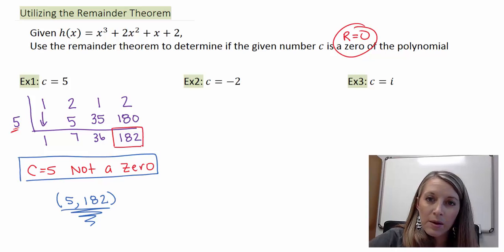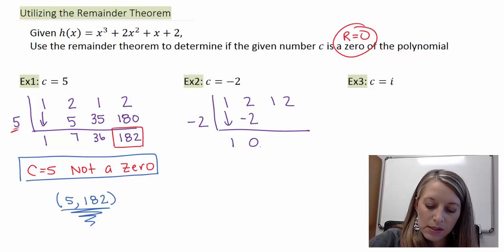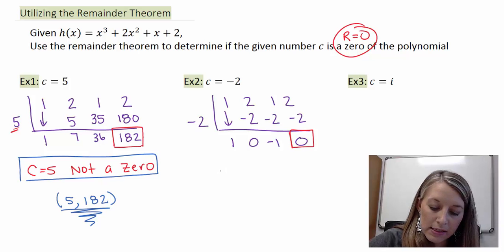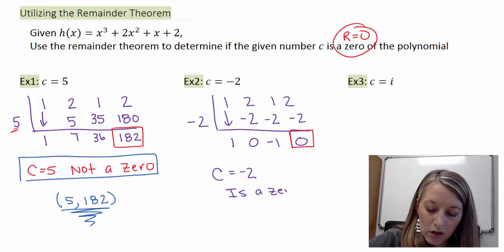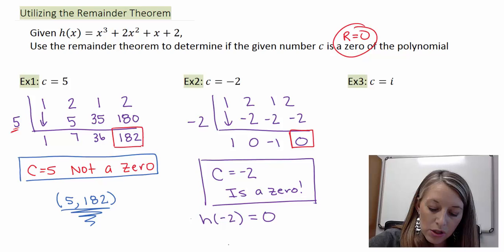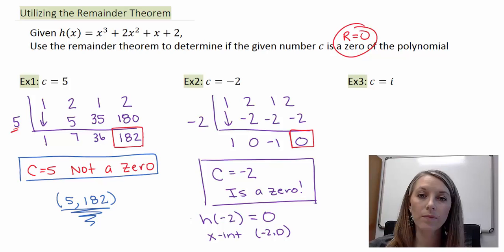For example 2 with c equal to negative 2: coefficients are 1, 2, 1, 2, divided by negative 2. Bring down the 1, multiply gives negative 2, add gives 0, multiply gives 0, add gives negative 1, multiply gives negative 2, add gives 0. The remainder is 0, so c equals negative 2 is a zero of the function. That means h of negative 2 equals 0, and we have an x-intercept at the ordered pair (negative 2, 0).